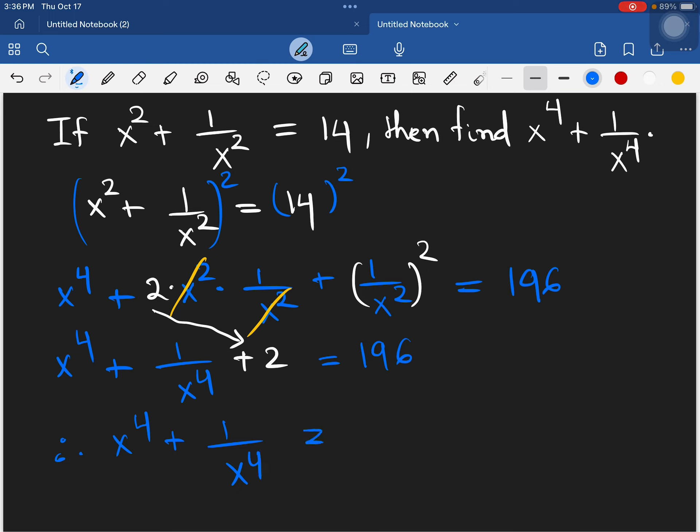Therefore, x power 4 plus 1 over x power 4 equals 196 minus 2, which equals 194. So x power 4 plus 1 over x power 4 is 194.